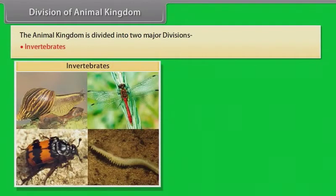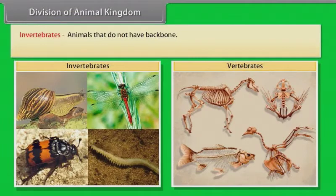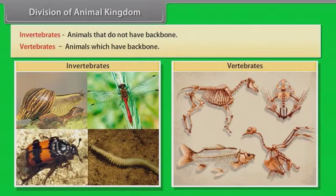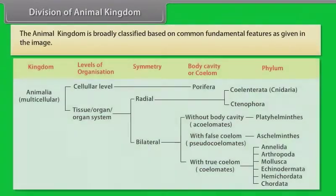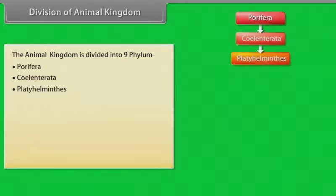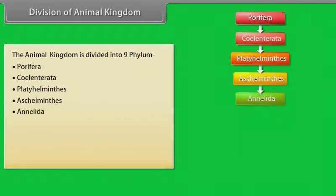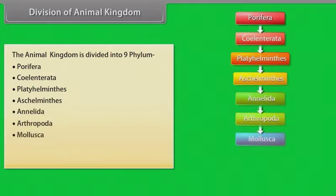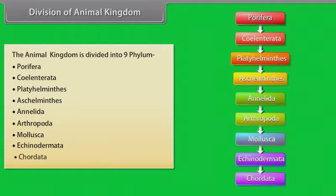The animal kingdom is divided into two major divisions: invertebrates — animals that do not have a backbone — and vertebrates — animals which have a backbone. The animal kingdom is broadly classified based on common fundamental features and is divided into nine phyla: Porifera, Coelenterata, Platyhelminthes, Aschelminthes, Annelida, Arthropoda, Mollusca, Echinodermata, and Chordata.